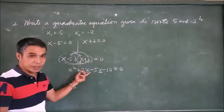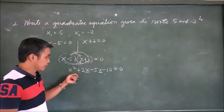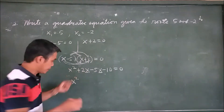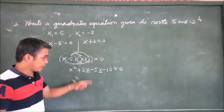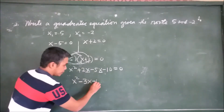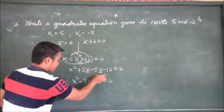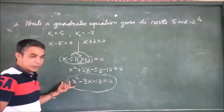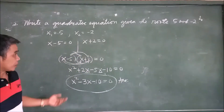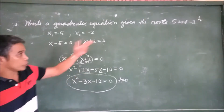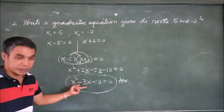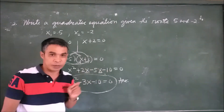Since the signs are different, we subtract. The larger number 5 is negative and the smaller is positive, so the result is negative. 5 minus 2 equals 3, and we keep the negative sign, giving us −3x. So x² − 3x − 10 = 0. This is the answer: the quadratic equation with roots 5 and negative 2 is x² − 3x − 10 = 0.